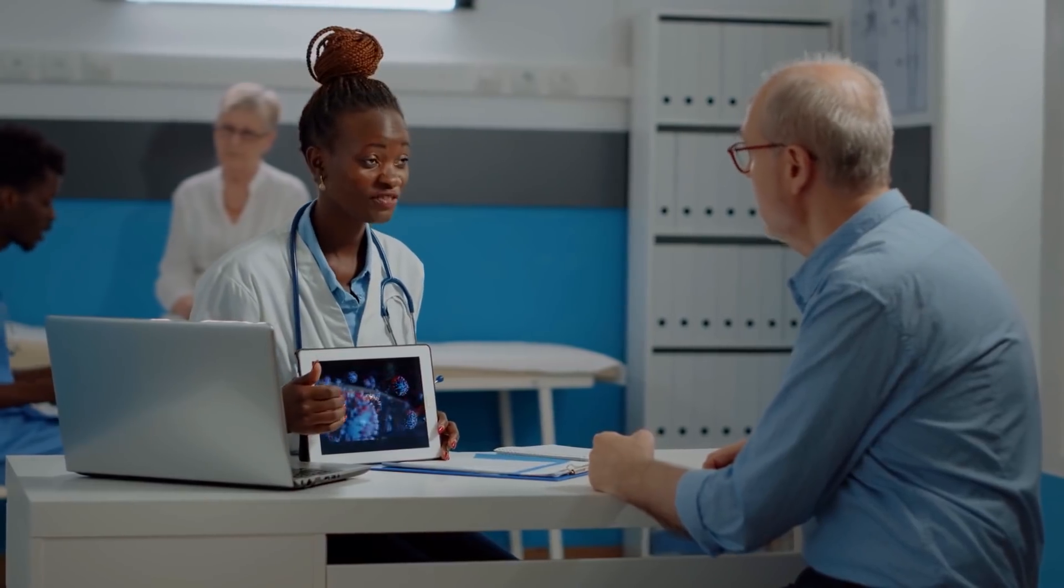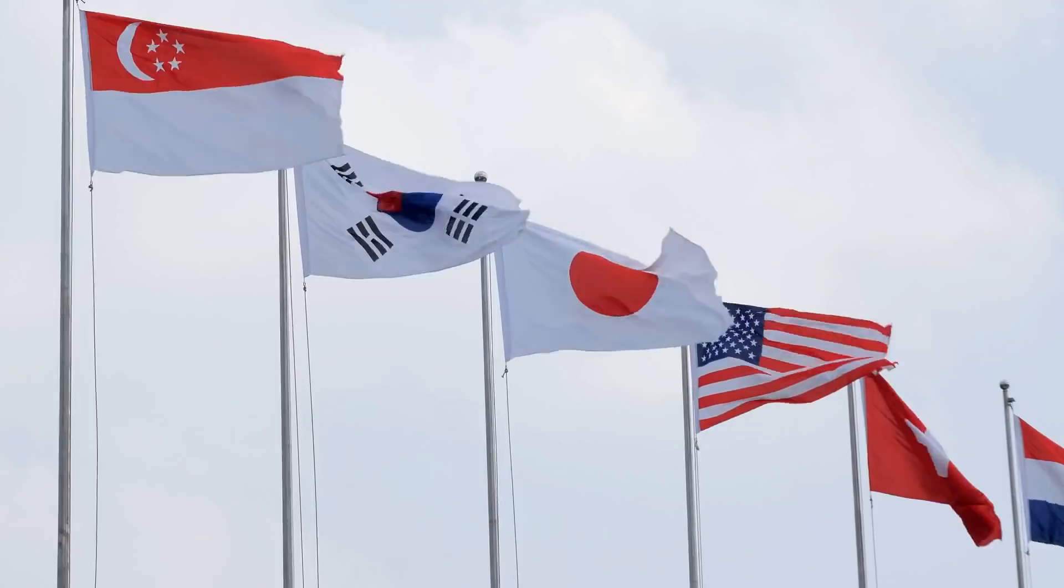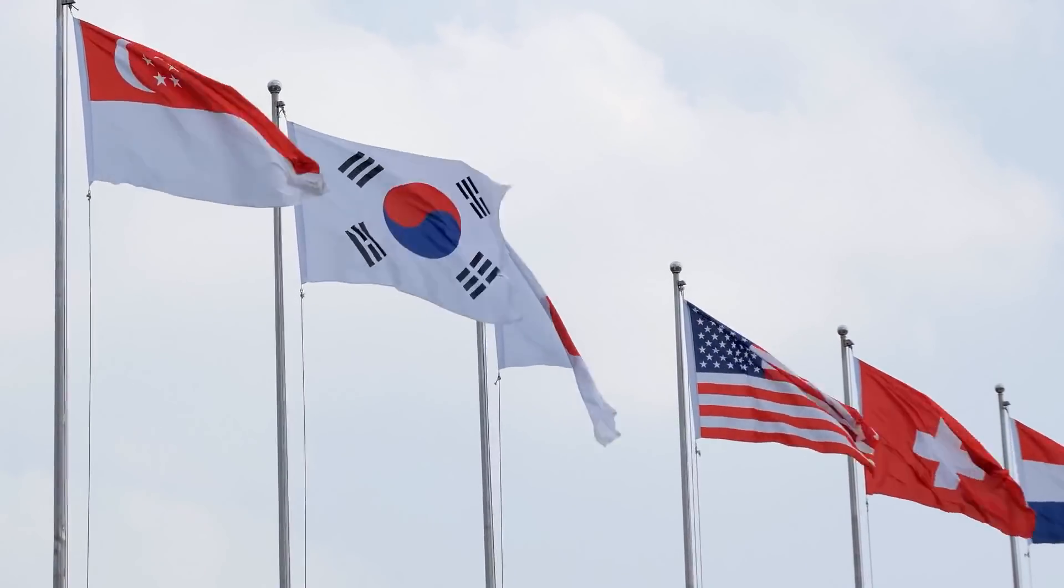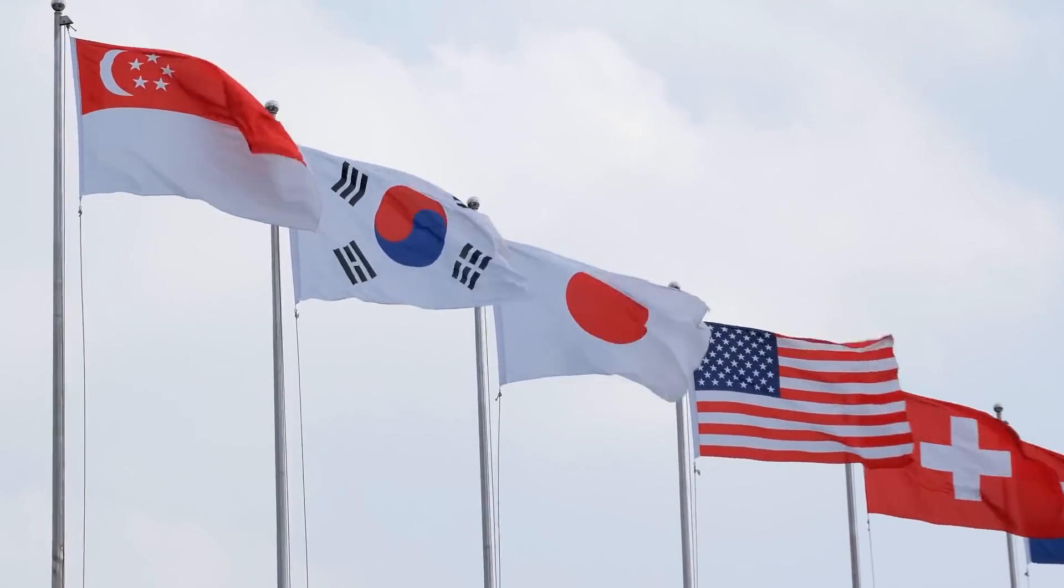It was believed to be a descendant of the C.1 variant, first identified back in January. Other countries confirmed with this variant include China, England, the Democratic Republic of the Congo, and New Zealand.